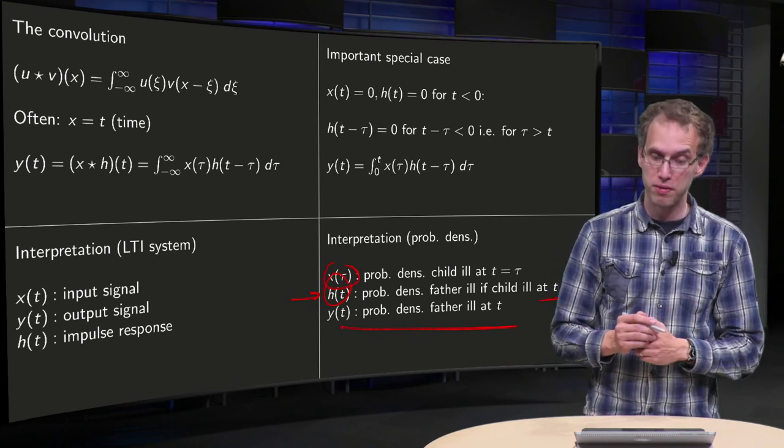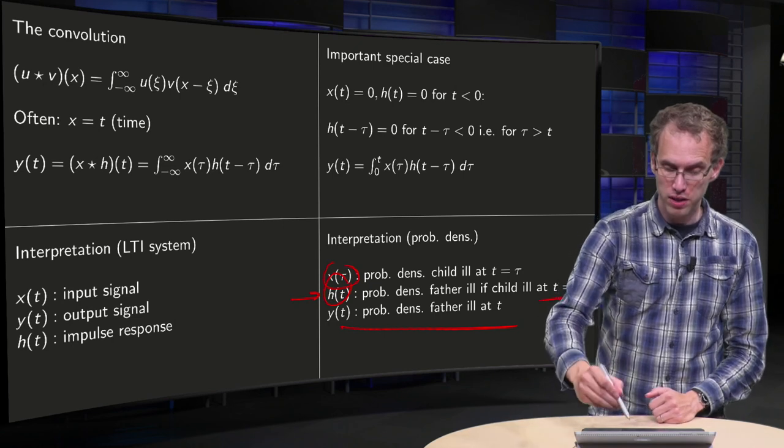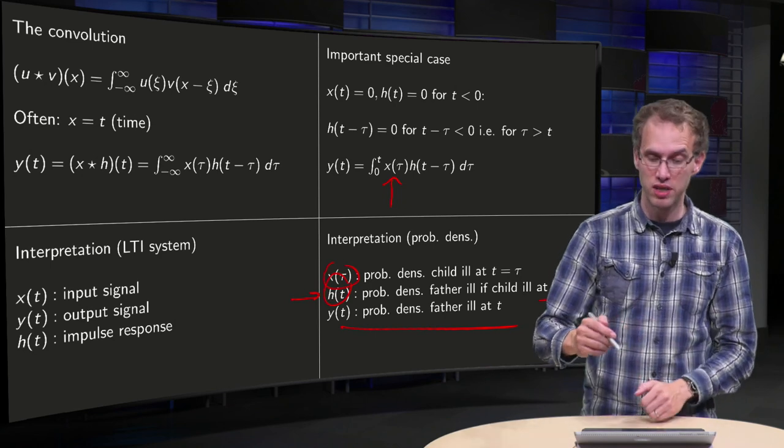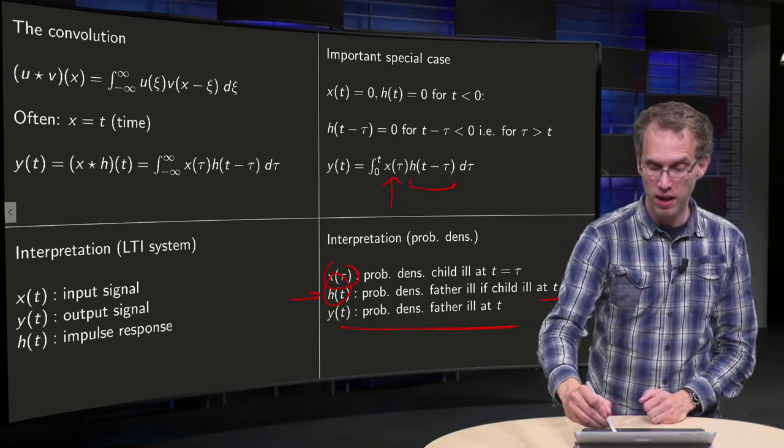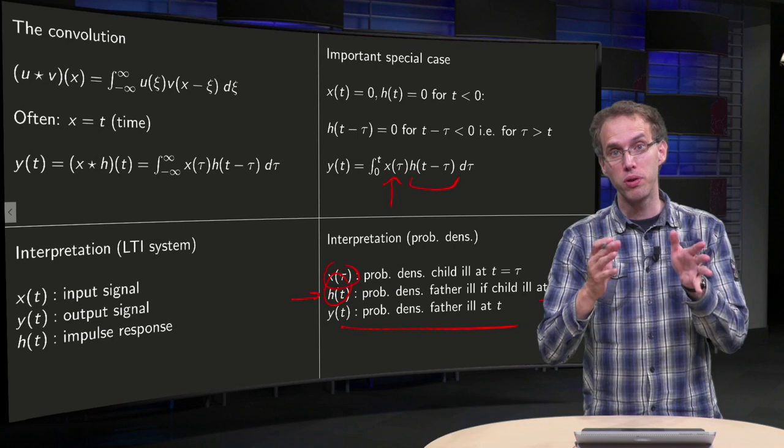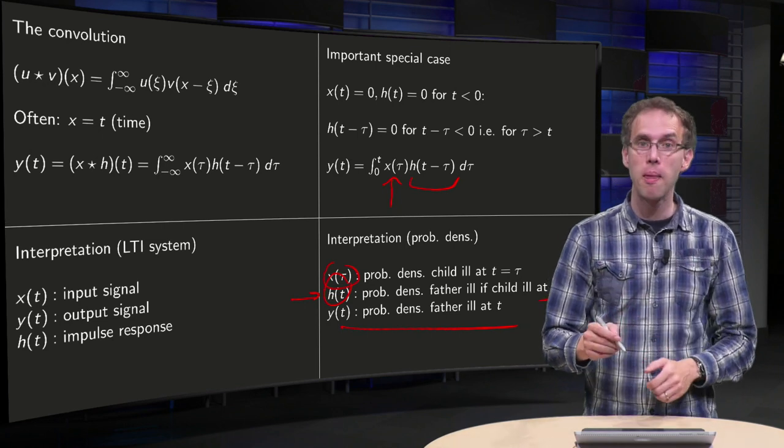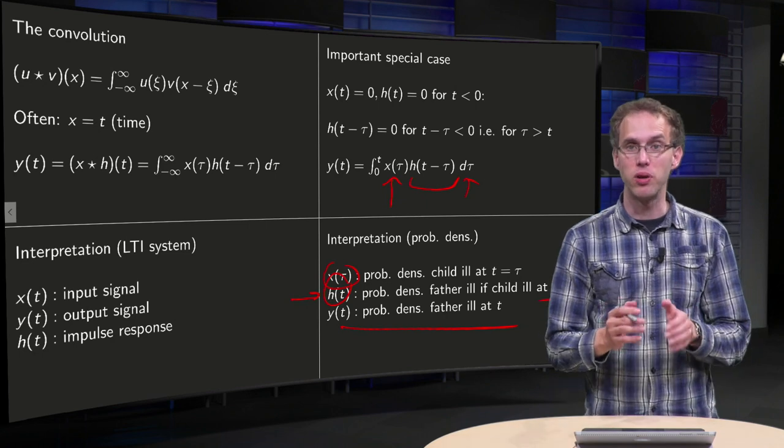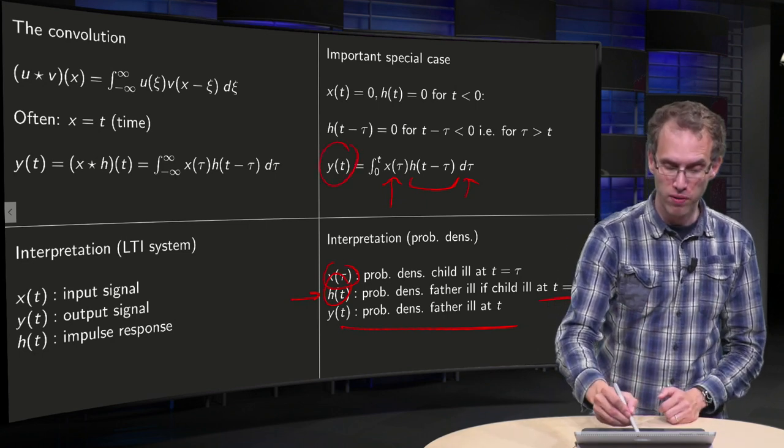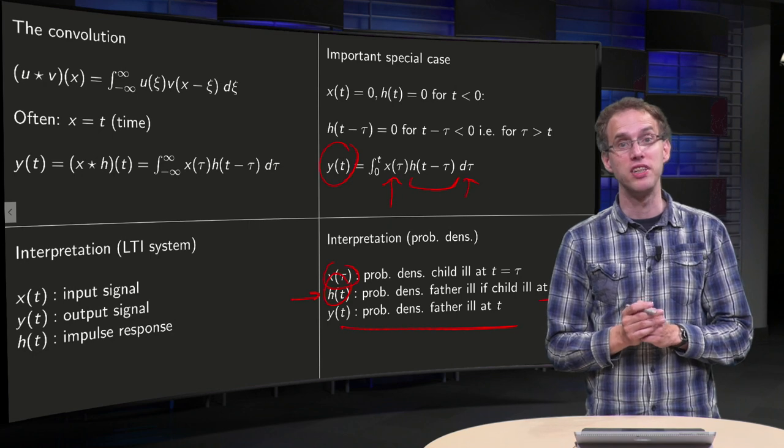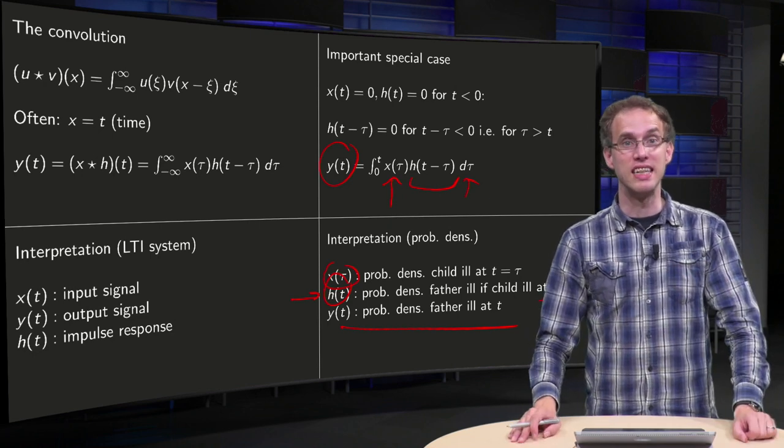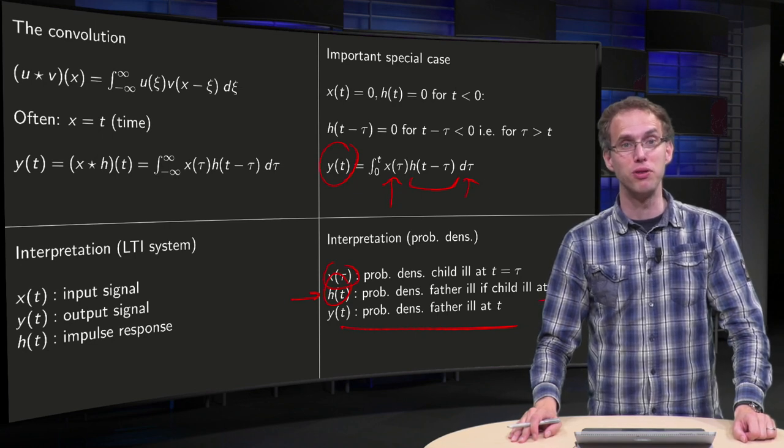Well what do we have? You have the chance that the child gets ill at tau times the chance that the father gets ill at the delay, at t minus tau, so delta t later, and then you have of course to add up all the times, the tau that you integrate, so that's why your y of t gives the probability density that the father will get ill, so that's a second interpretation of a convolution product.